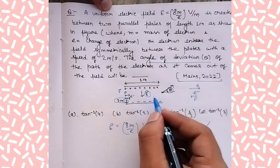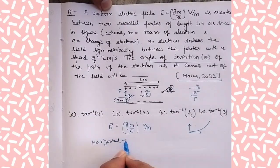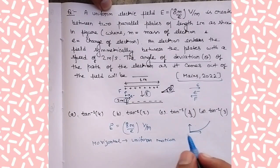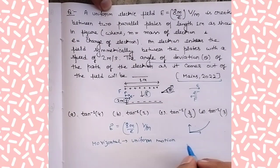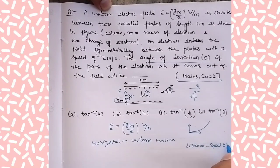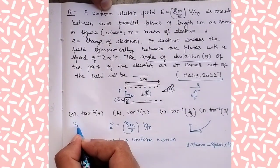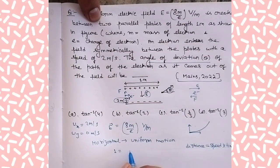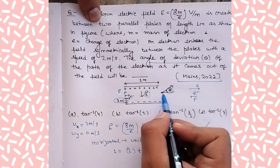Considering horizontal motion: it is uniform since no force acts in the x direction. We apply distance = speed × time. Distance is one meter, initial velocity in x direction is two meters per second, initial velocity in y direction is zero. So time turns out to be one half second — the electron exits the plates in half a second.